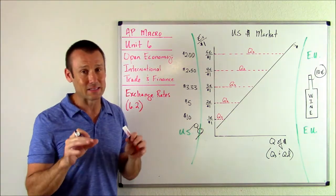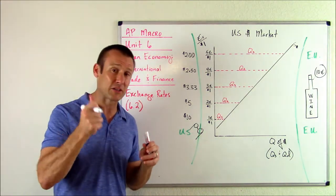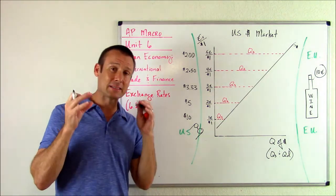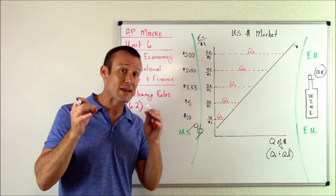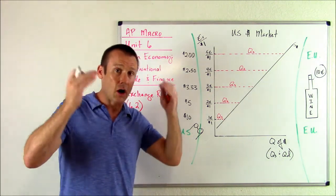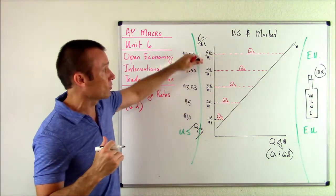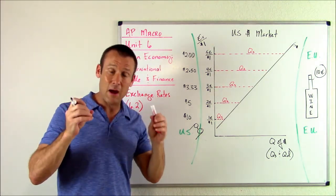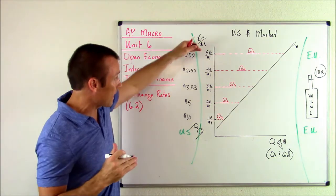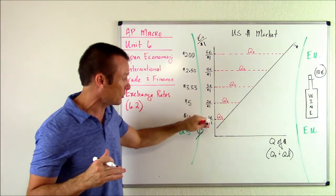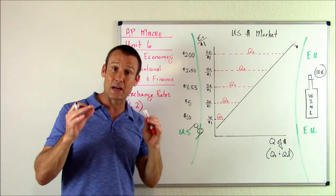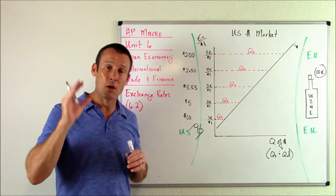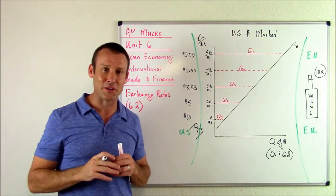As we end this video, the big takeaway: exchange rates are just the price. They're the price of the dollar and they're basically telling us the international purchasing power of a dollar. As that dollar appreciates and you need more euros to get a dollar, the purchasing power is increasing. But as that dollar depreciates and you need fewer euros to get a dollar, the international purchasing power is actually going down. Hope that video makes sense — I can't wait to see you in the next video.